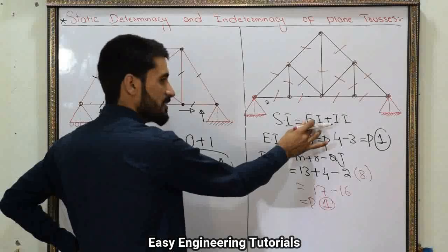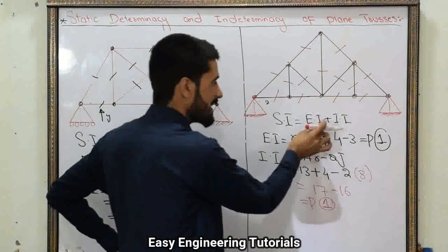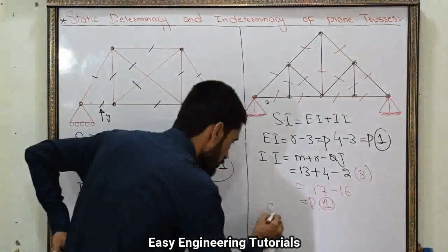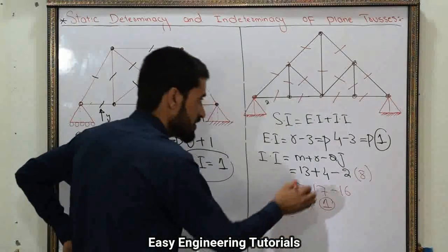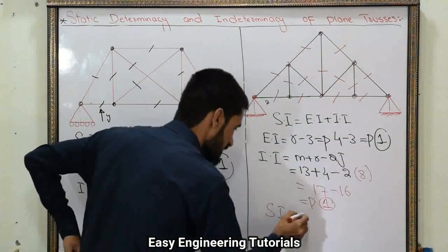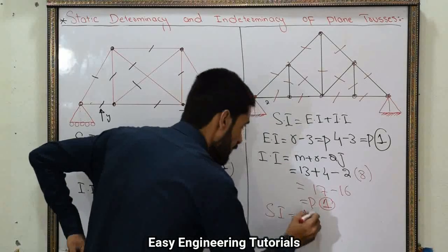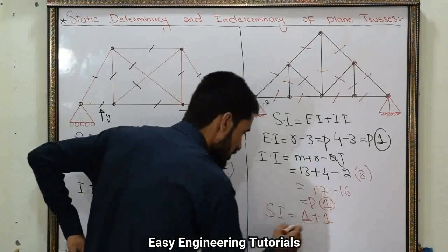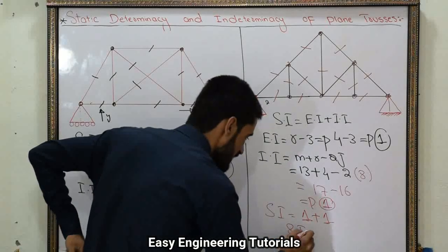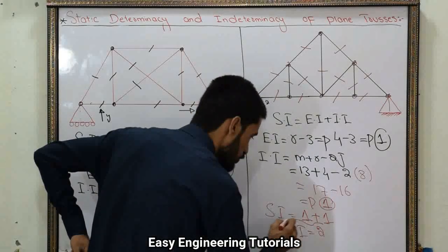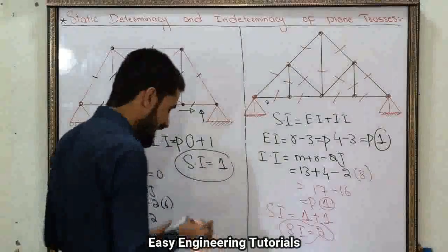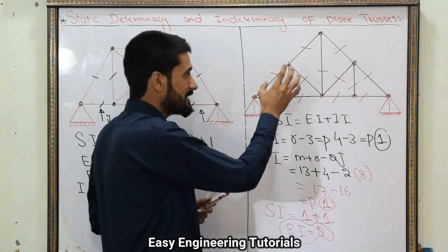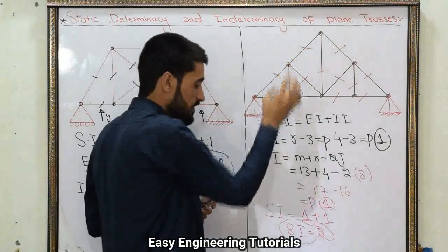So static indeterminacy equals external indeterminacy plus internal indeterminacy, which is 1 plus 1 equals 2. Therefore this truss is indeterminate to the second degree.